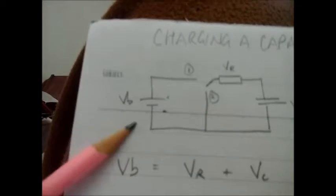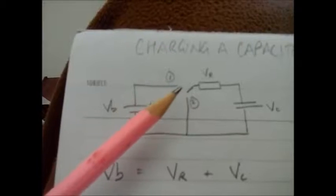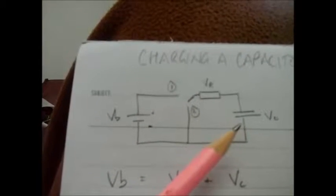I can rearrange these equations. We've got the battery there, a DC battery. I've got a switch, a resistor and a capacitor.